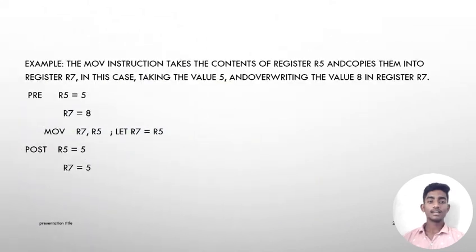Let us see an example of the MOV instruction. The MOV instruction takes the contents of register R5 and copies them into register R7, in this case taking the value 5 and overwriting the value 8 in register R7. Pre: R5=5, R7=8. MOV R7, R5, let R7 equal R5. Post: R5=5, R7=5.